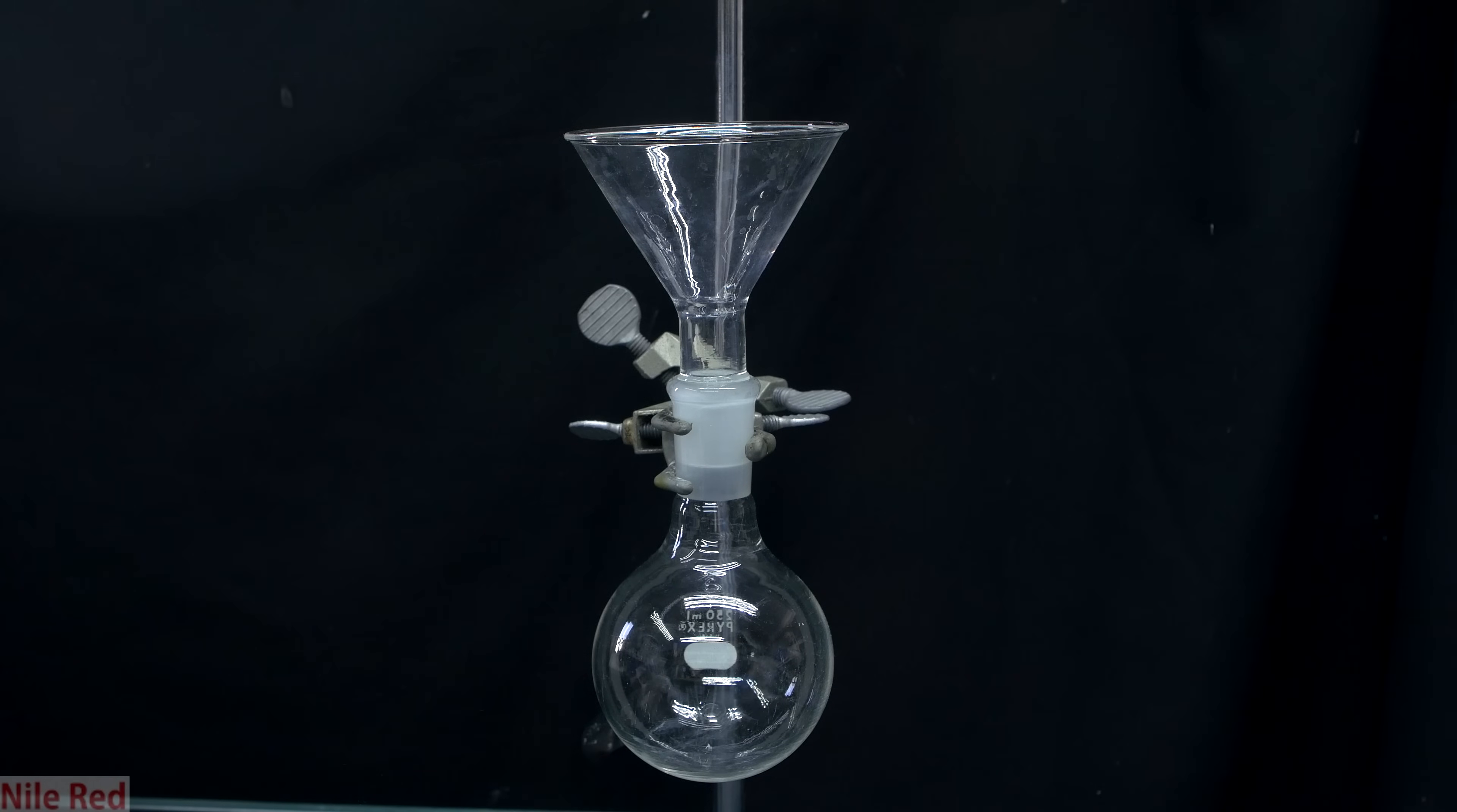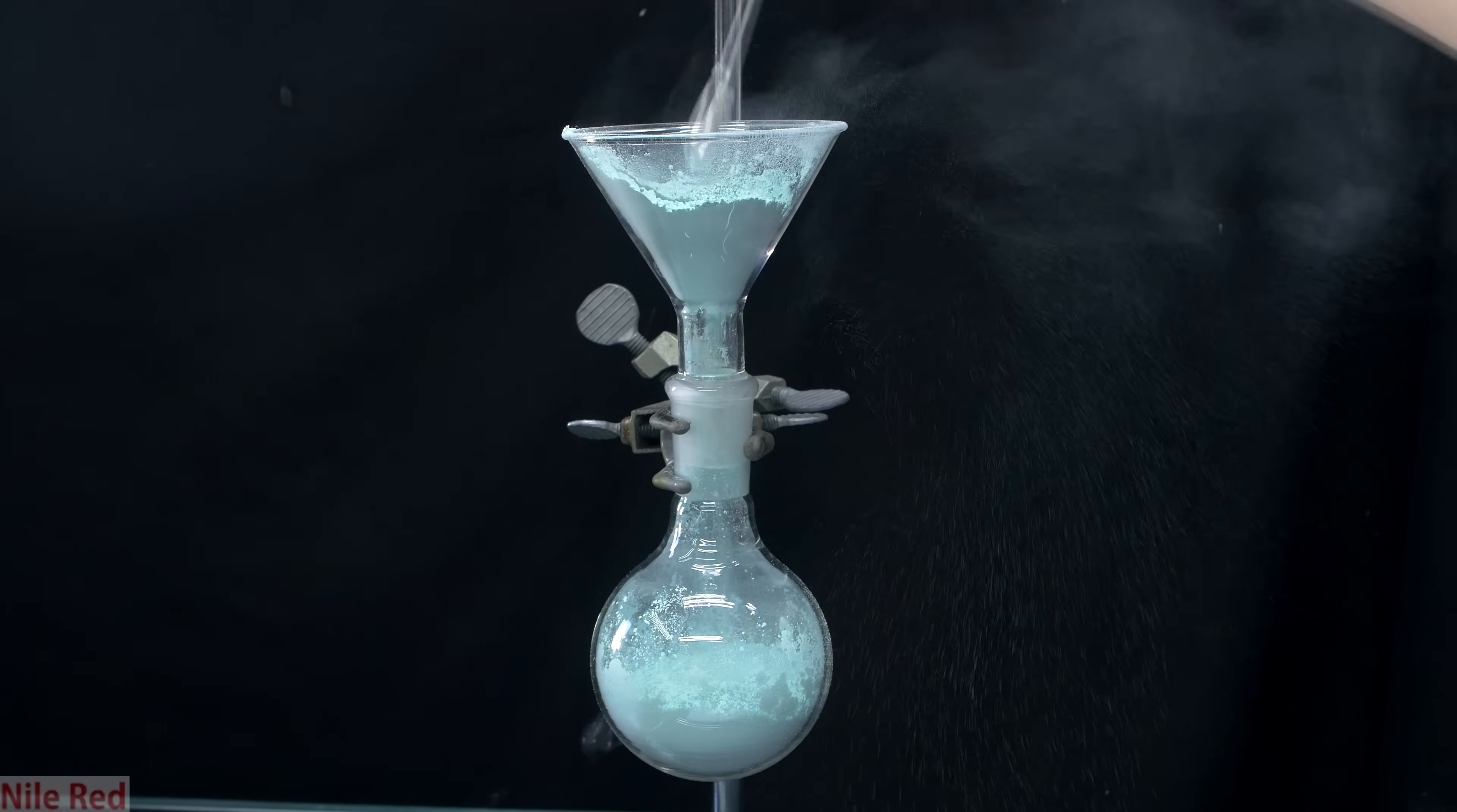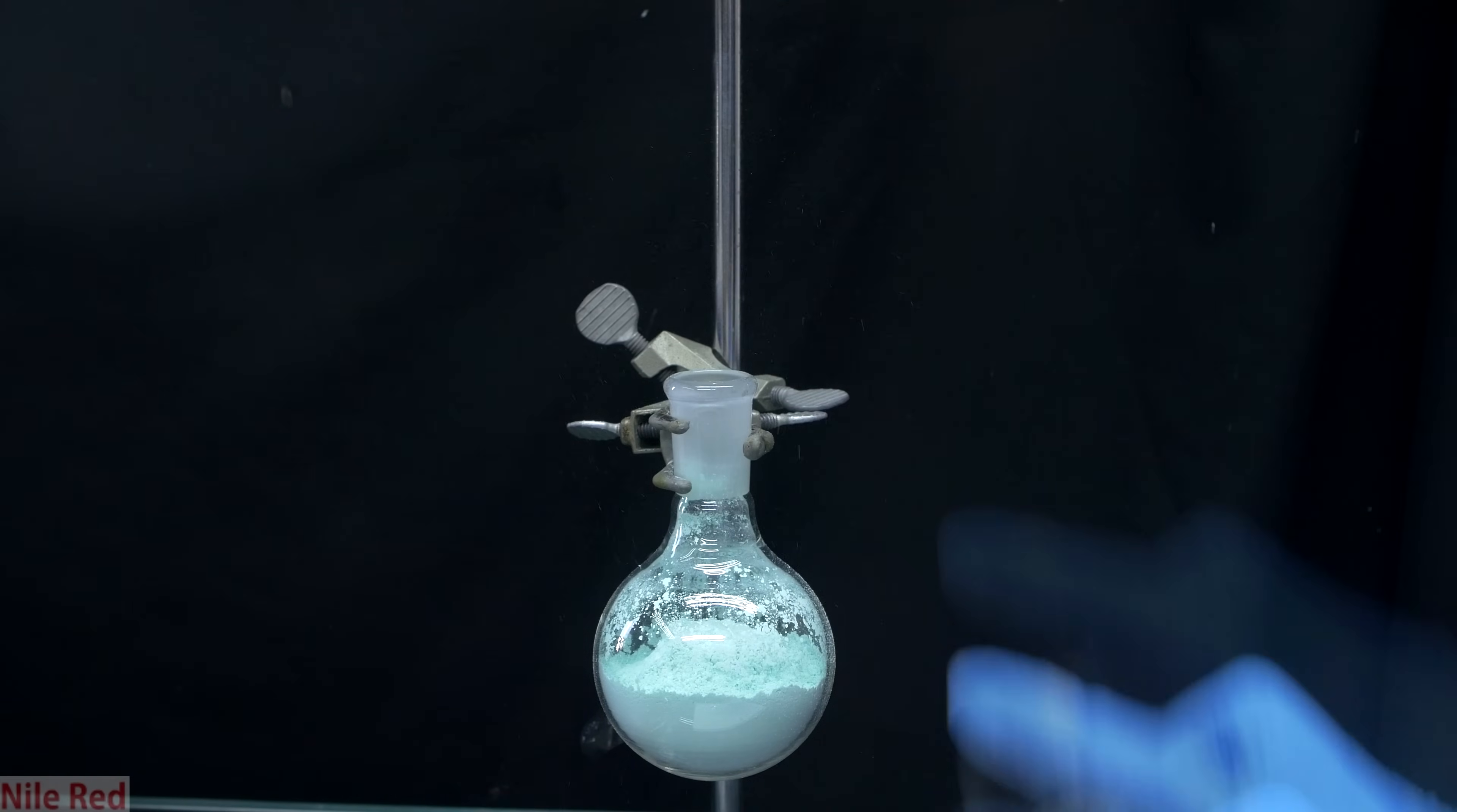This mixture of niacin and basic copper carbonate was then transferred to a 250ml round bottom flask. You can see it was a little bit sloppy and some of the powder splashed over the side of the funnel, but let's just pretend that never happened. There was a little bit more powder left on the paper, and this was added as well, and then the funnel was removed.